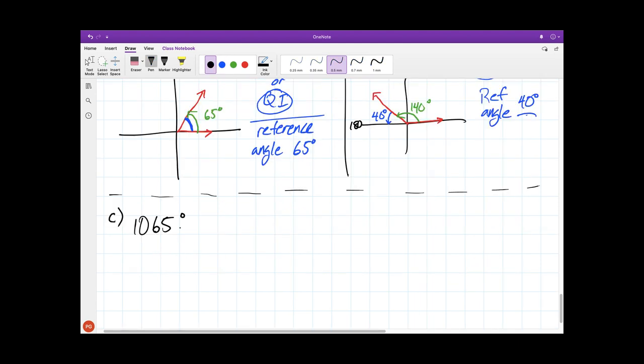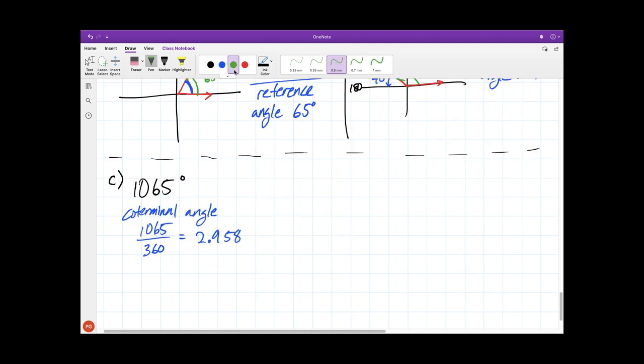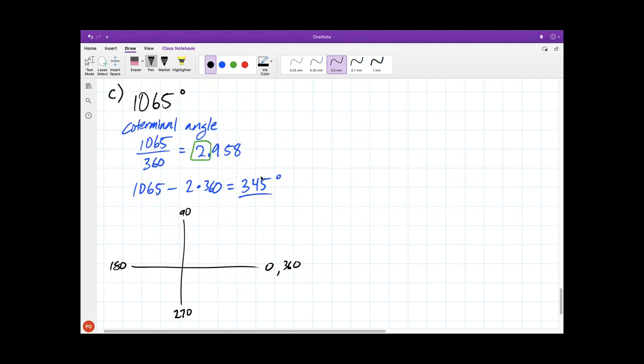Our next example features something that's bigger than 360. Anytime that you have an angle like this, it's really helpful to find a coterminal angle and use that to draw it in standard position. So when we divide by 360, we get 2.958, and we would get an angle of 345 degrees. On our axis, 345 degrees isn't quite a full turn. It's 15 degrees short here.